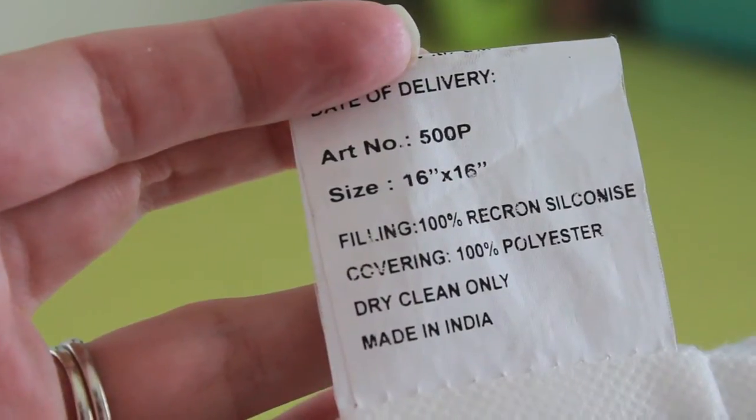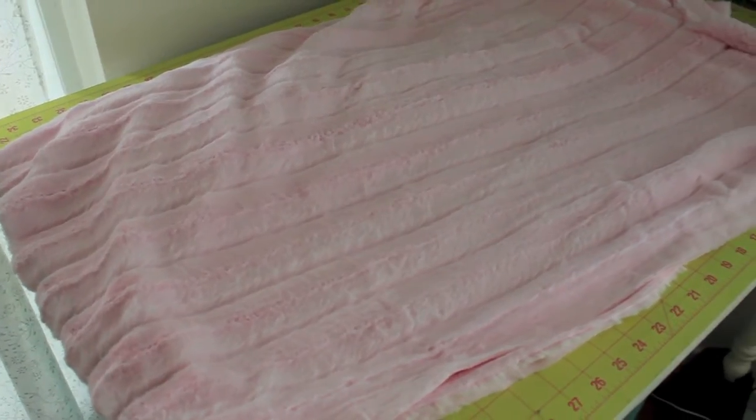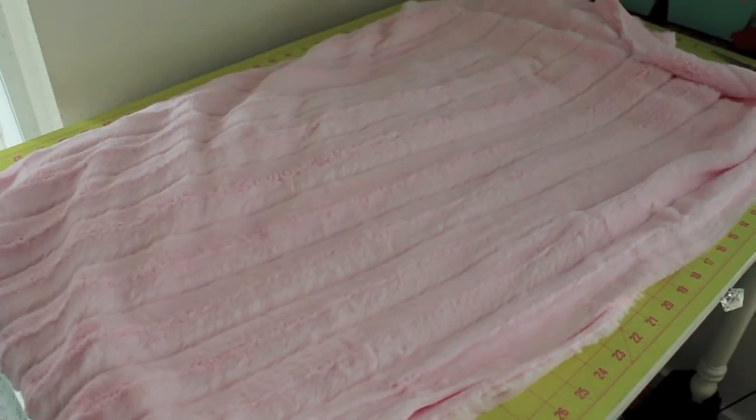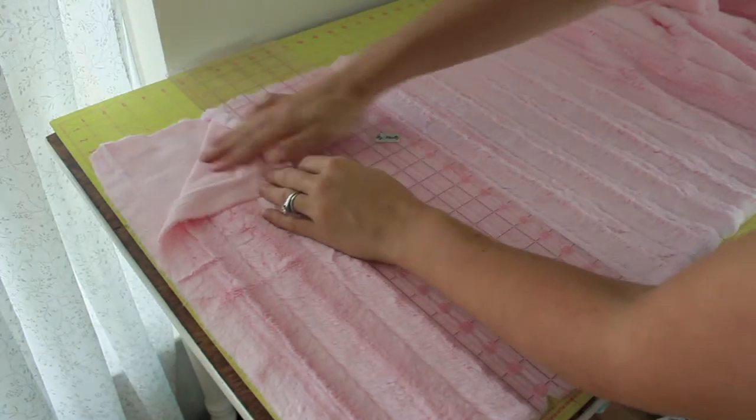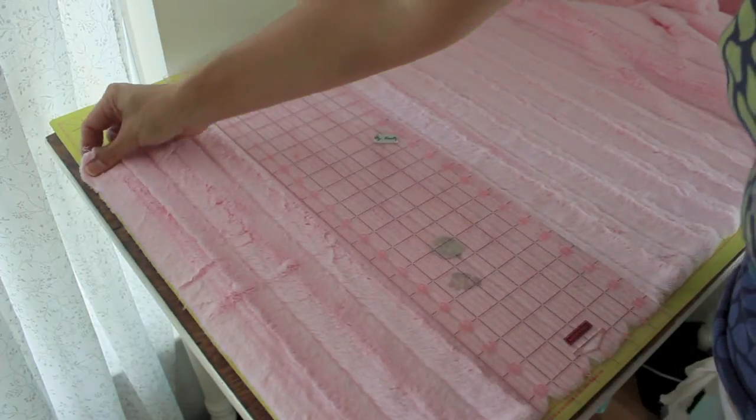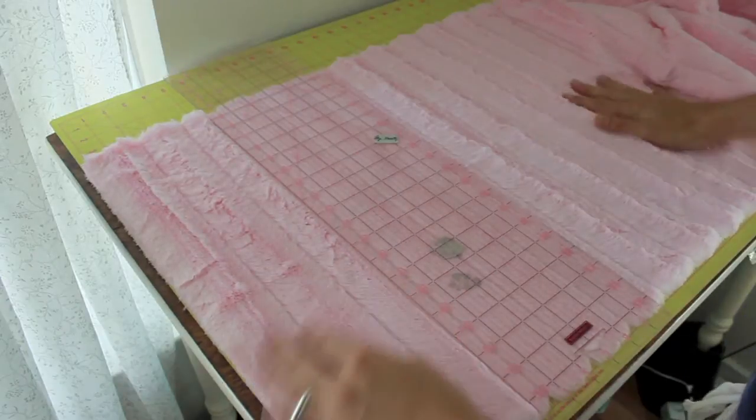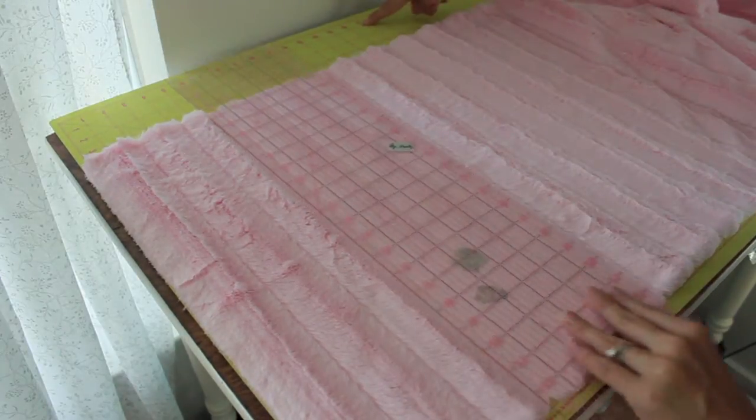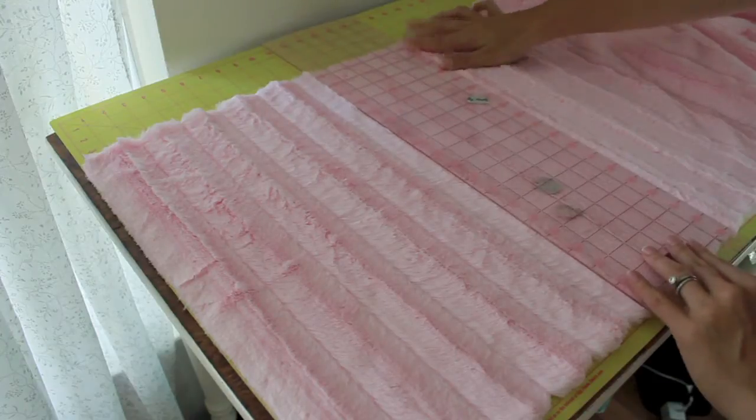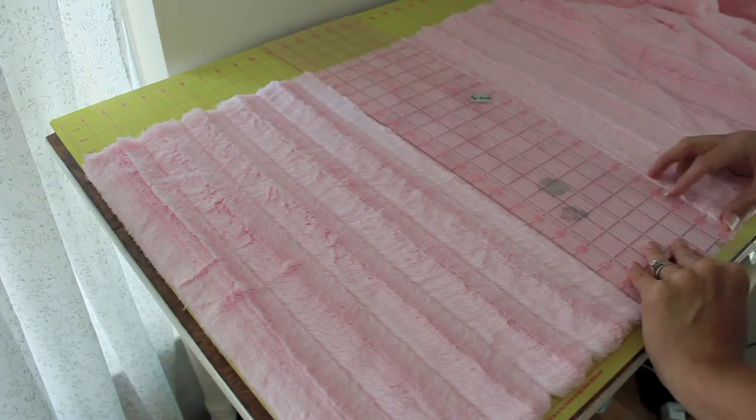So let's get going. Okay, I'm going to be using a 16 by 16 pillow and here's that gorgeous Shannon Fabrics chinchilla in the baby pink. So what you want to do is fold your fabric in half so it's easier to cut. For the 16 by 16 I'm going to be cutting a 17 by 17 inch square and then some smaller pieces.